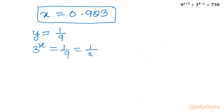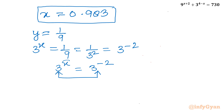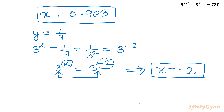Applying the division rule, we write x times ln 3 equal to ln 53 minus ln 18. Solving this equation, x comes out to approximately 0.983. For the base solution y equal to 1/9, we write 3 power x equal to 1 over 9, which is 3 power minus 2, so x equals minus 2. There are two real solutions: x equals 0.983 and x equals minus 2.